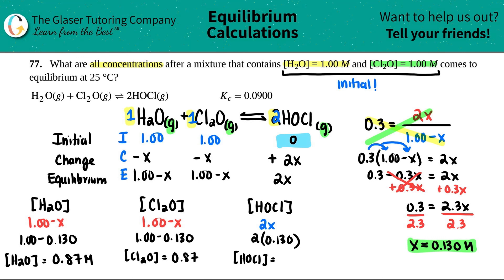There you go! H2O concentration is 0.87, Cl2O is the same, and HOCl was 0.260. That is your final answer.